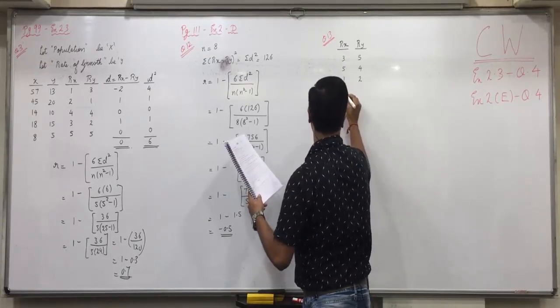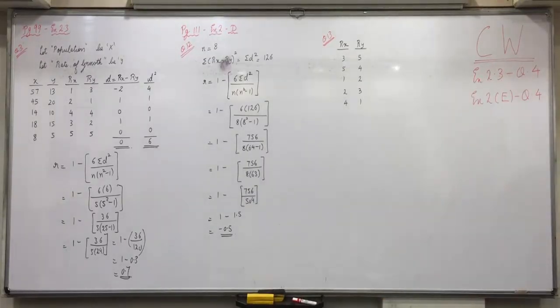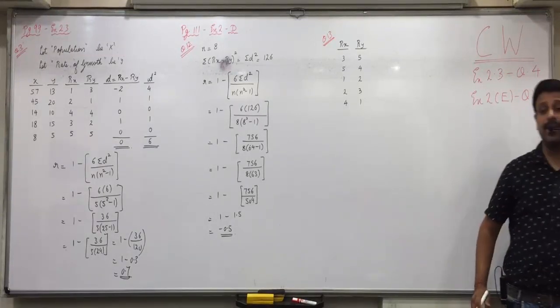So, directly Rx and Ry are given: 3, 5, 5, 4, 1, 2, 2, 3 and 4, 1. Any confusions with this? Directly the ranks are given. Do you understand in bracket? First is x and second is y.